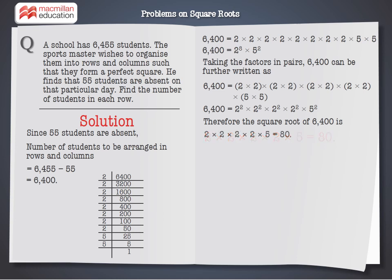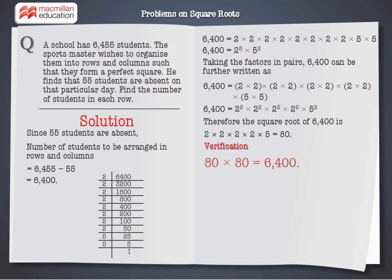To verify, we can confirm that 80 into 80 is equal to 6,400.